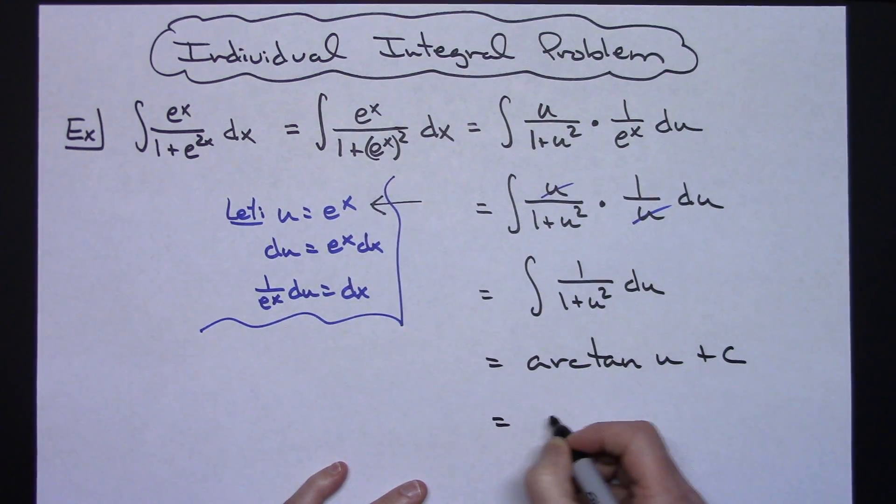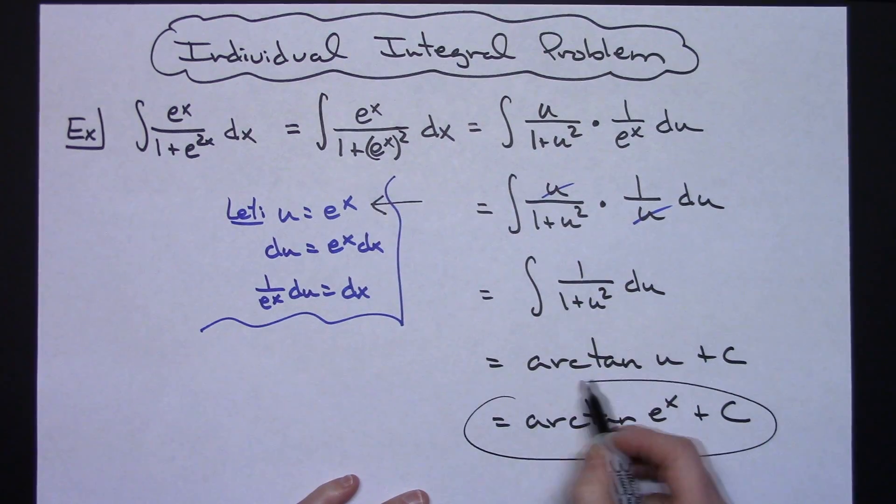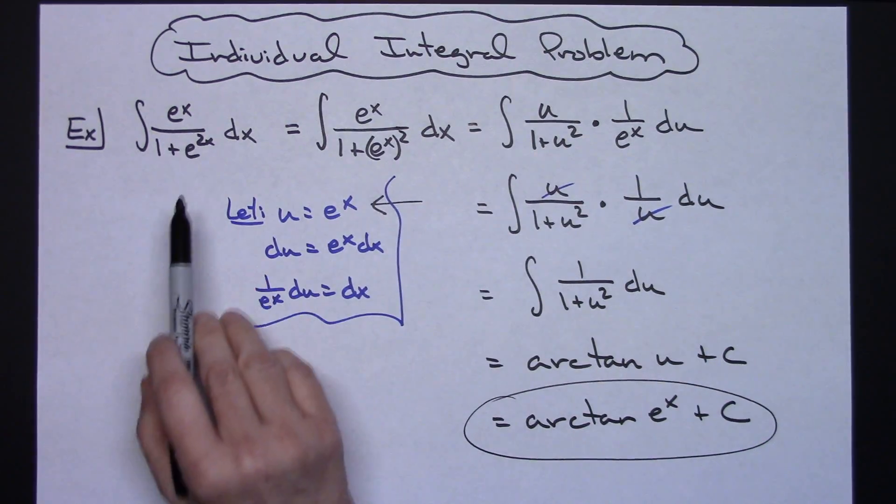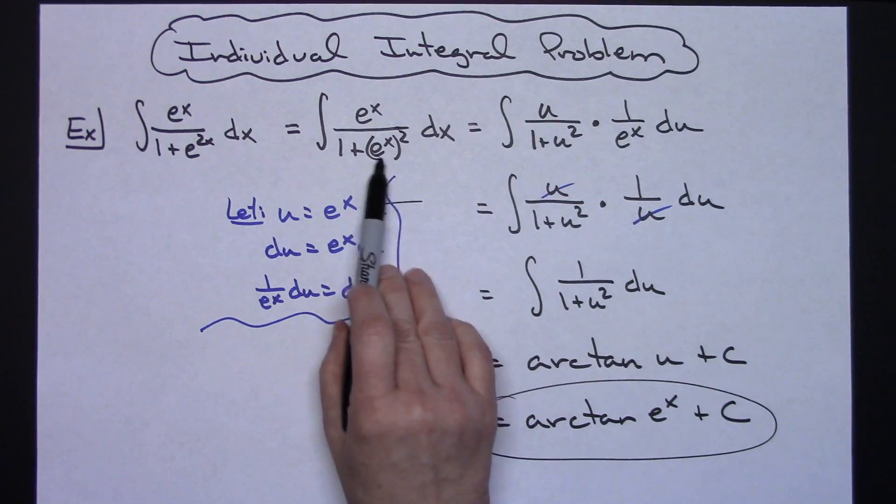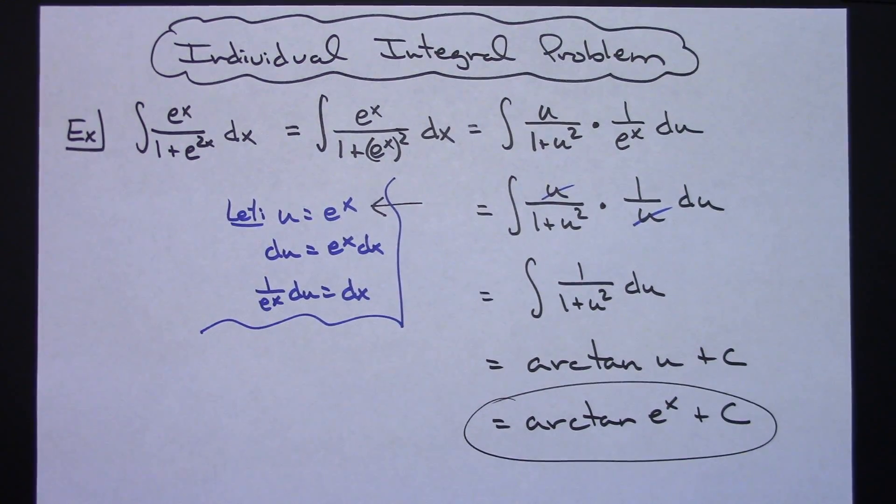And then replacing that u with what it is, so inverse tangent e to the x plus C. Just recognizing sometimes you can rewrite a power using those laws of exponents, and then it makes your u substitution a little bit easier. Definitely thanks for watching, and don't forget to subscribe to the channel.